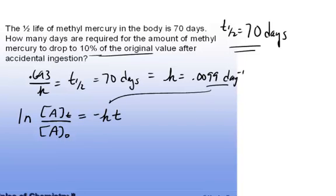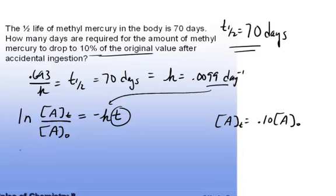Now I have a value for k, I'm wanting to know t, and I want to know how long it takes for the concentration to drop to 10% of the original. So in that case, the A at some time T is going to equal .1 times the original. So I'll say the natural log of .1 times A-naught over A-naught equals negative .0099 times t, the time that we're looking for.